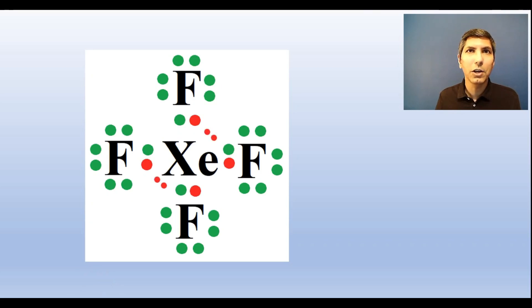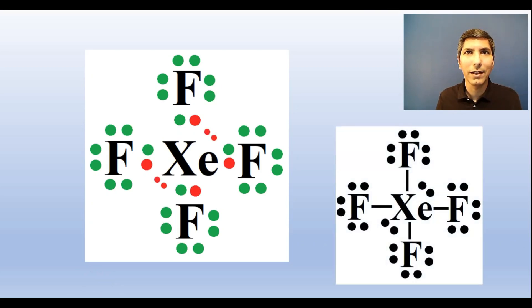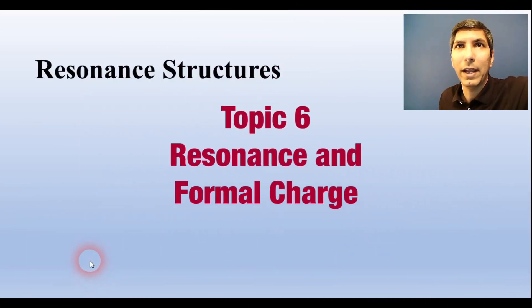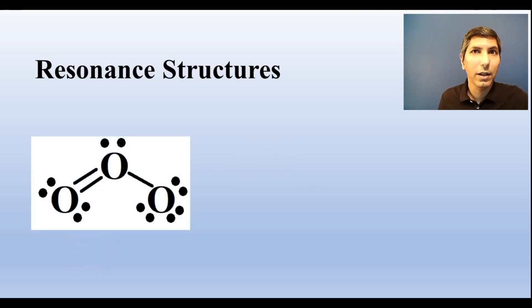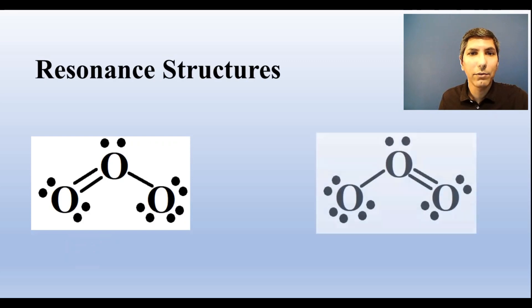So those extra dots end up being placed as unshared pairs on the central atom just like this. Sometimes there's more than one acceptable way to draw a Lewis diagram. Let's say you're trying to draw the structure for ozone, which has the formula O3. You might draw it like this or you might draw it like this. The double bonds are in different positions, but both structures are fine. These are called resonance structures.